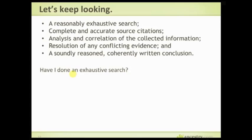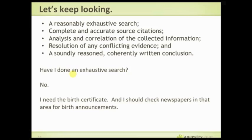Once you get that done, you can write a soundly reasoned, coherently written conclusion — or at least a reasonably well-written one. Always ask yourself: have I done an exhaustive search? Is there another piece of information that might help? On this case, we would still need the birth certificate. Always check the state you're in and make sure birth certificates existed for that time — in North Carolina they started being published in 1913, so one should exist. Also check newspapers in that area for birth announcements. If you don't know the answer, keep digging.